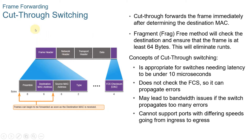Let's focus on cut-through switching. Store-and-forward switching drops frames that do not pass the FCS check, so it does not forward invalid frames. By contrast, cut-through switching may forward invalid frames because no FCS check is performed. However, cut-through switching has the ability to perform rapid frame switching — the switch can make forwarding decisions as soon as it has looked up the destination MAC address of the frame in its MAC address table. Frames can begin to be forwarded as soon as the destination MAC address is received, without waiting for the rest of the frame.